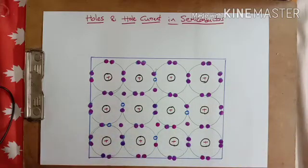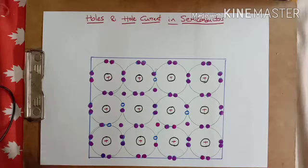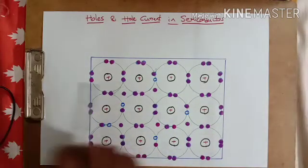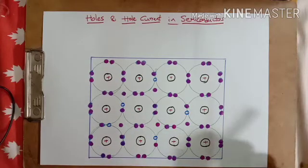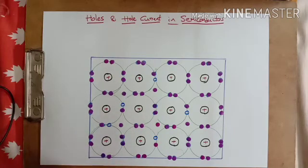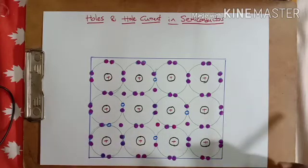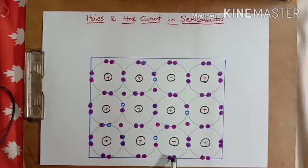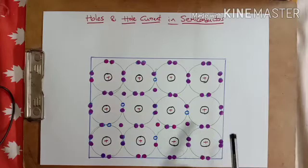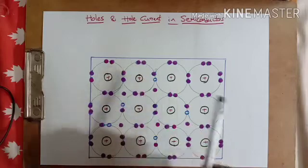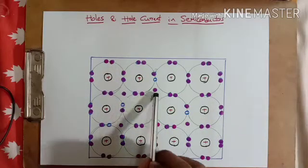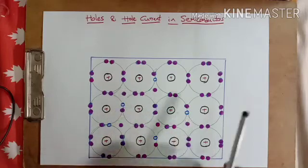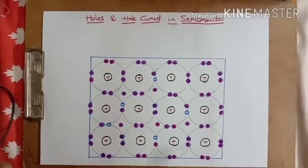There is no concept of holes in metals, where the valence band and conduction band are merged together and plenty of electrons are available in the conduction band even at zero degrees. That's why metals are good conductors. In semiconductors at zero degrees Kelvin, no bonds are broken so it acts as an insulator, but as temperature rises, electrons are freed and holes are left behind.